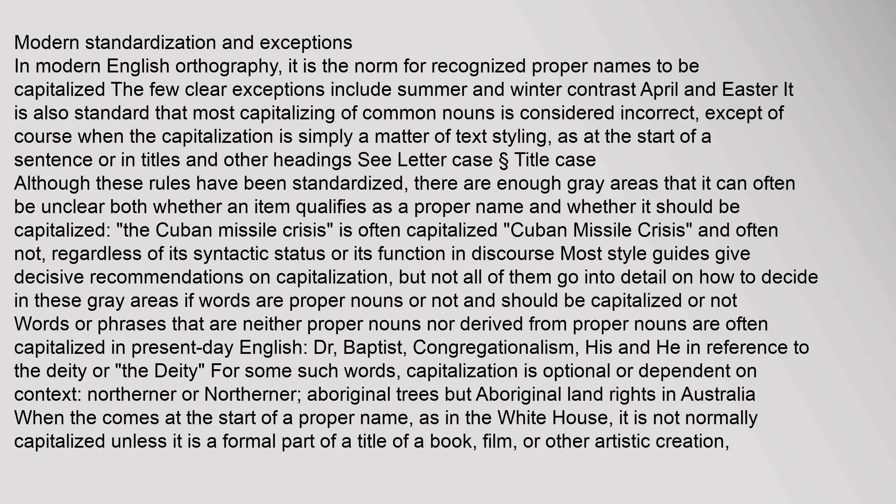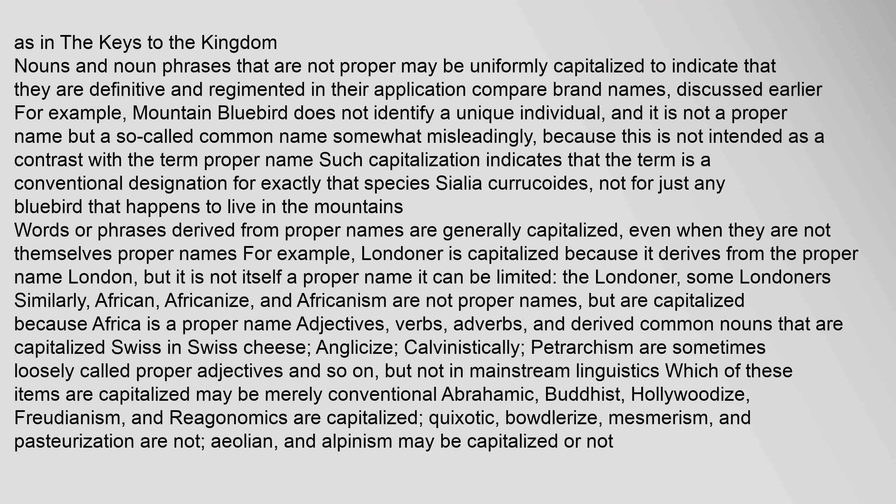For some such words, capitalization is optional or dependent on context — Northerner or northerner; Aboriginal trees but Aboriginal land rights in Australia. When the comes at the start of a proper name, as in the White House, it is not normally capitalized unless it is a formal part of a title of a book, film, or other artistic creation. Nouns and noun phrases that are not proper may be uniformly capitalized to indicate that they are definitive and regimented in their application. For example, Mountain Bluebird does not identify a unique individual and is not a proper name, but such capitalization indicates that the term is a conventional designation for exactly that species.